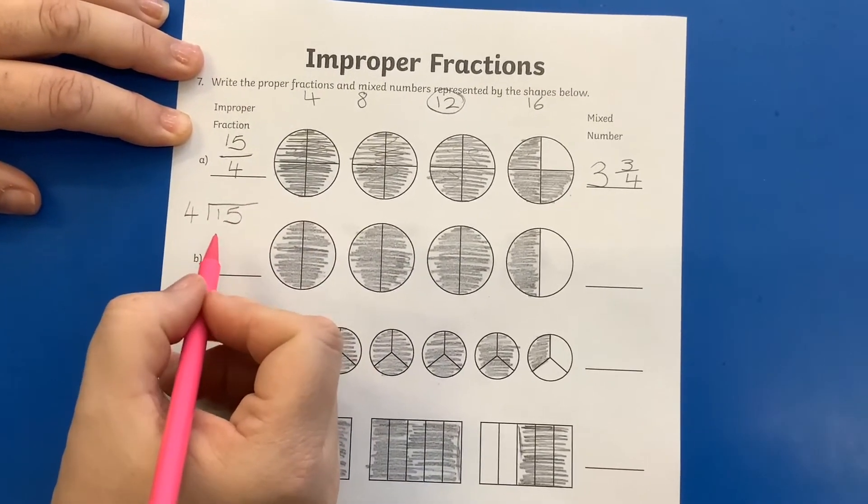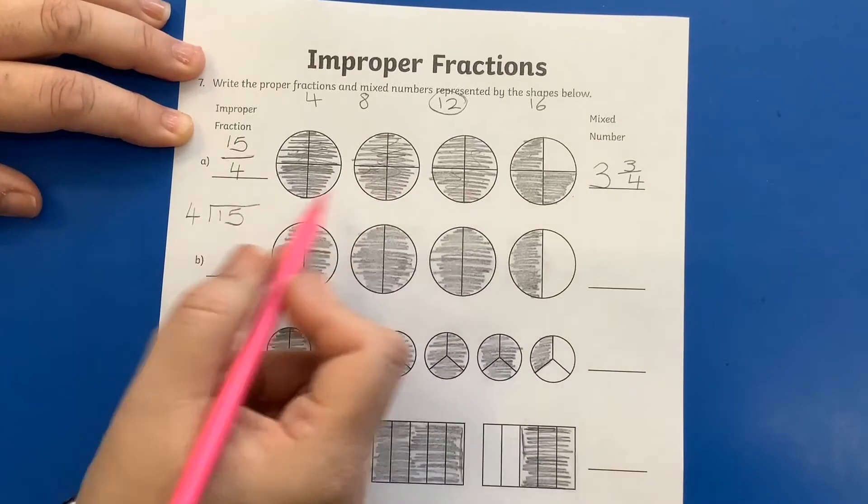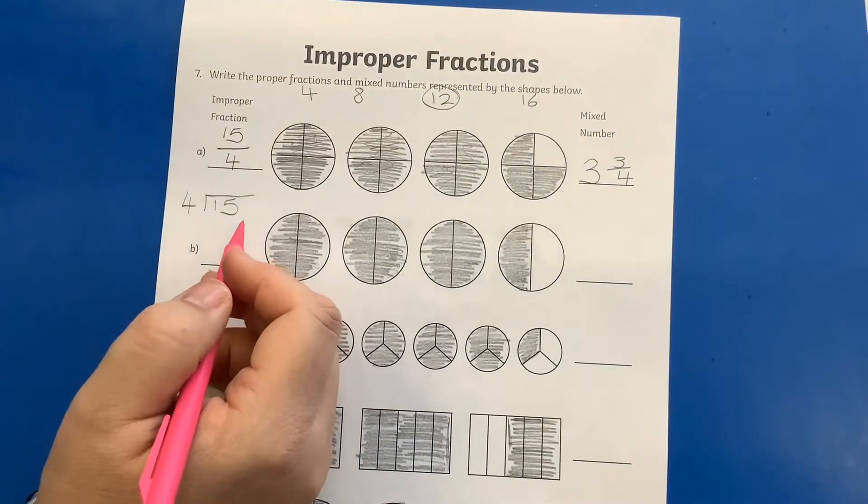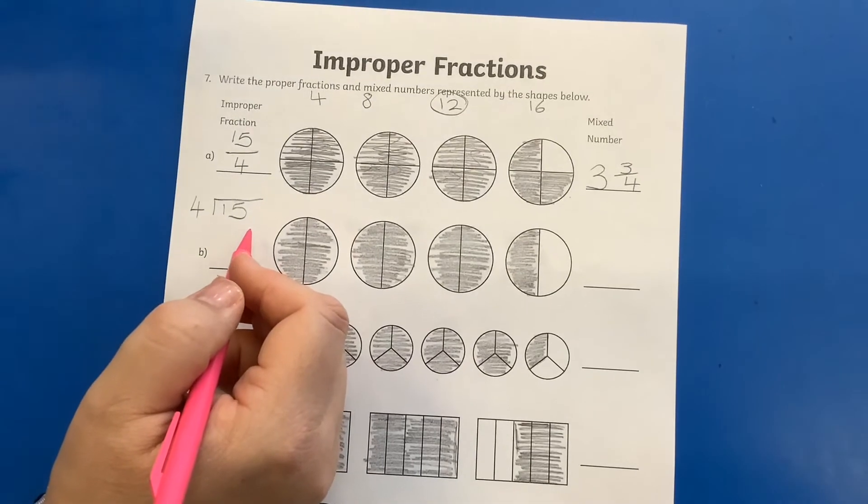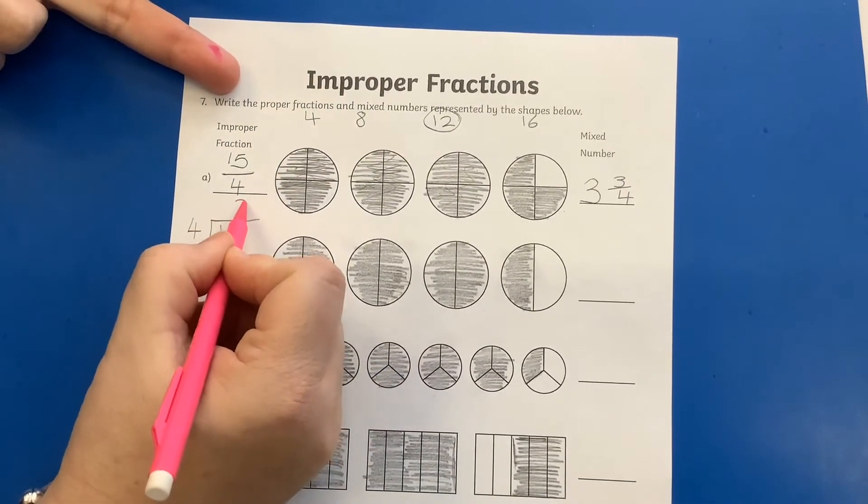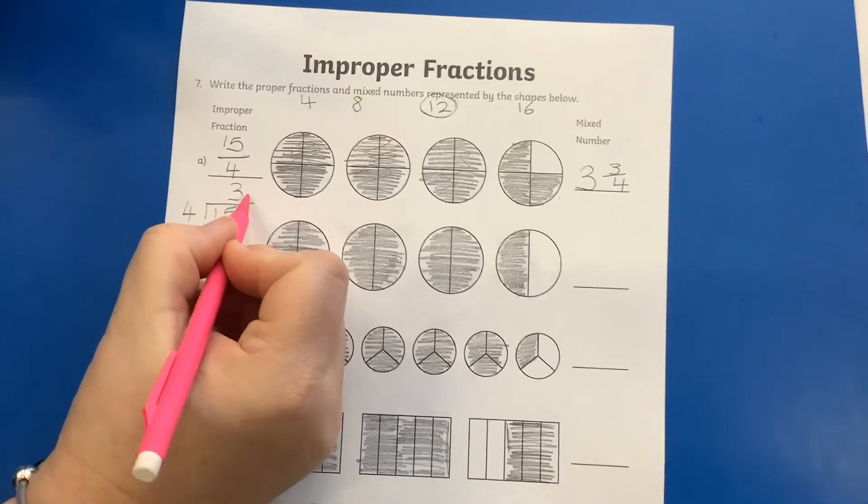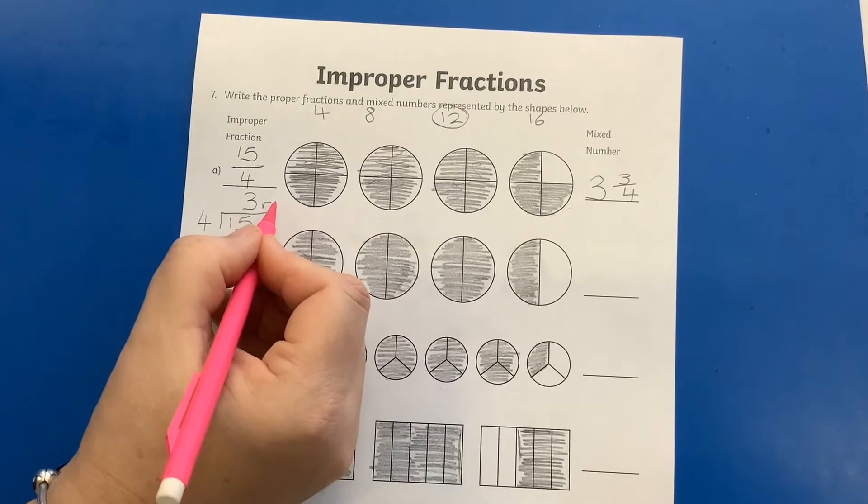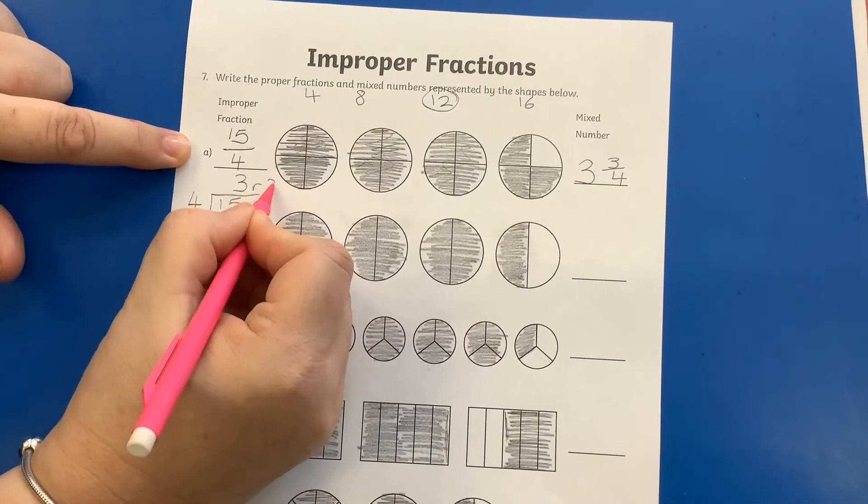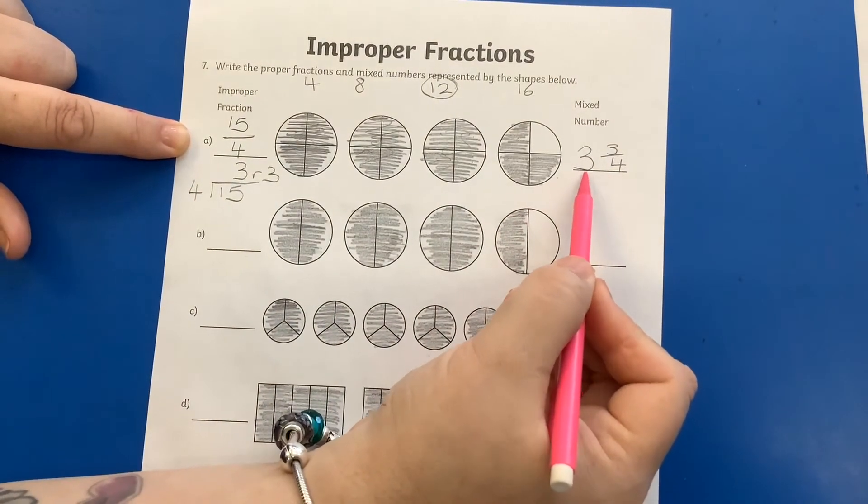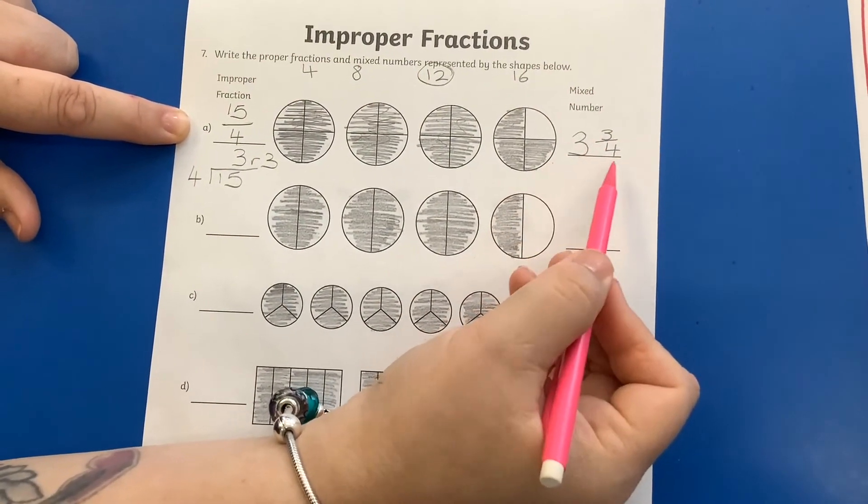So I could write four here, and I could write fifteen here. Just to show you that this is what we're doing. I know you can see it here, but this is a mathematical way. How many fours go into fifteen? Four, eight, twelve. So I've got three fours, and that gives me twelve. And then a remainder, I've got thirteen, fourteen, fifteen. So I've got three, remainder three. And that's what's given me here, my three and three quarters.